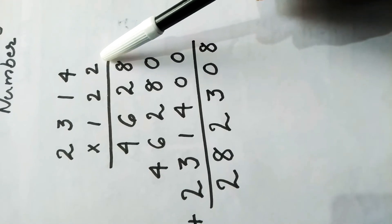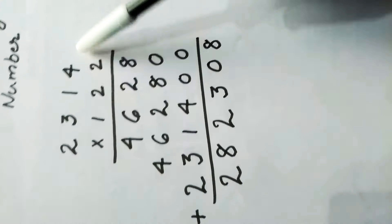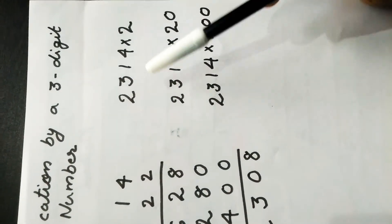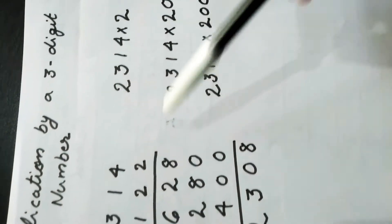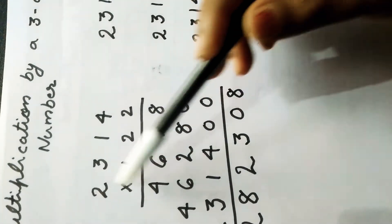The first step is 2,314 is multiplied by 2. 2,314 multiplied by 2 we get: 2 fours are 8, 2 ones are 2, 2 threes are 6, 2 twos are 4.